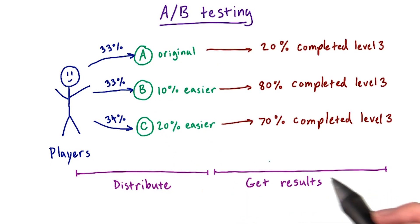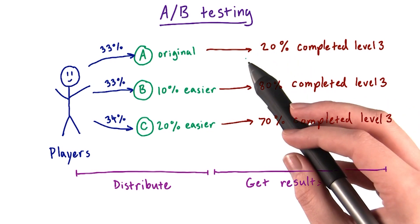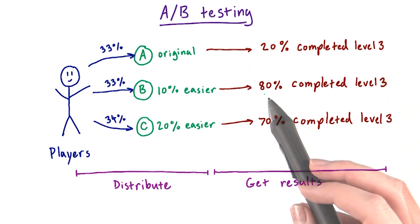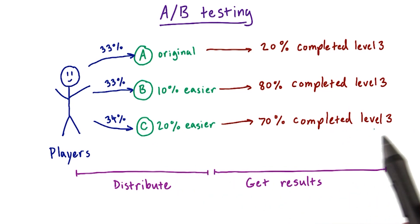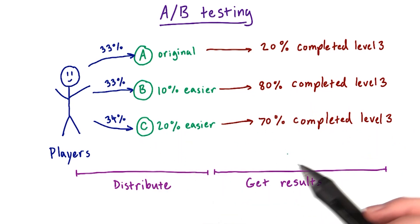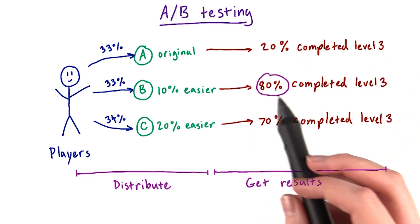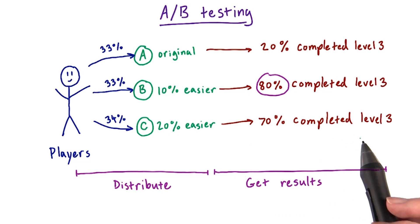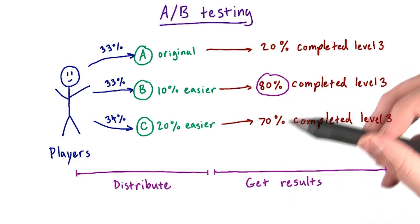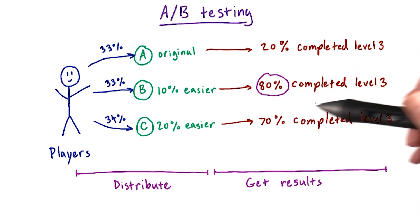Then we get our results and see how many players complete the level. We see that only 20% of our group A players completed the level, 80% of group B completed level three, and 70% completed level three for group C. So both B and C seem like a lot better options than A. And maybe the reason that C isn't as high as B is because it's too easy, so people get bored playing. Either way, AB testing lets us know for sure that version B is our best option.